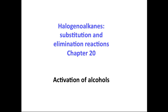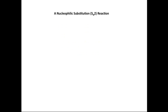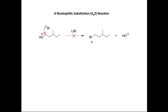We're going to discuss activation of alcohols, covered in the haloalkanes substitution and elimination reactions chapter. The first topic is a nucleophilic substitution reaction of an alcohol. In this example, we're looking to react a primary alcohol with bromide ion in an SN2 reaction to form a primary bromoalkane. But this reaction does not proceed — it is not possible to substitute the OH group with Br-.